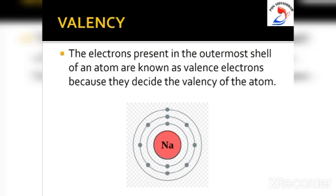Consider the sodium atom as an example. The atomic number of sodium is 11, so one sodium atom has 11 electrons. The electronic configuration of sodium is 2, 8, 1 — with 2 electrons in K shell, 8 electrons in L shell, and 1 electron in M shell. The M shell is the outermost shell, so sodium has 1 valence electron. When sodium combines with other atoms, only this 1 valence electron in the M shell takes part in the chemical reaction.